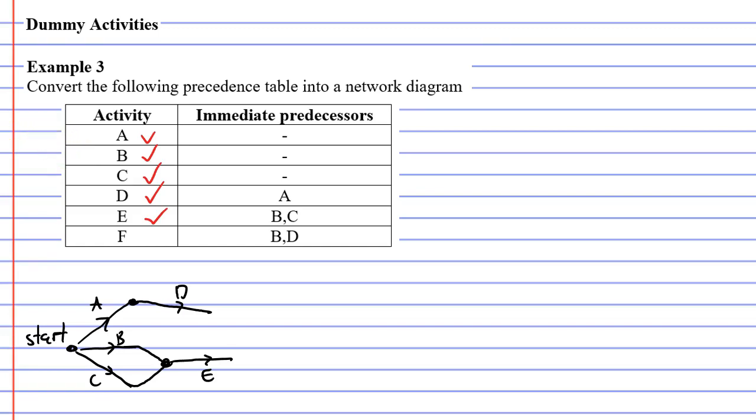Now moving on to activity F. Activity F comes after activities B and D. Now this is going to cause an issue because I need edge B to join at the end of edge D. It's not going to work because edge B has already joined to a vertex that has joined to the end of edge C.